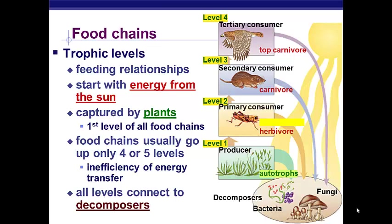Producers are also called autotrophs because they make their own food. Consumers are also called heterotrophs because they need to get their energy from other living organisms.